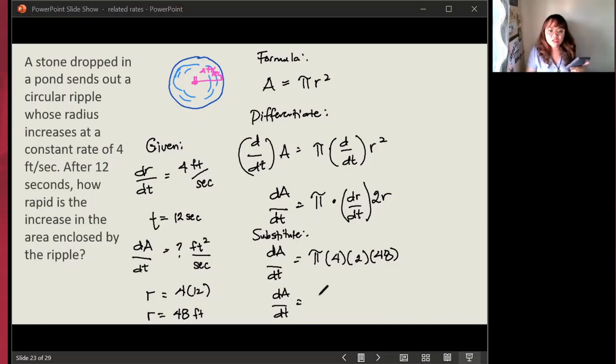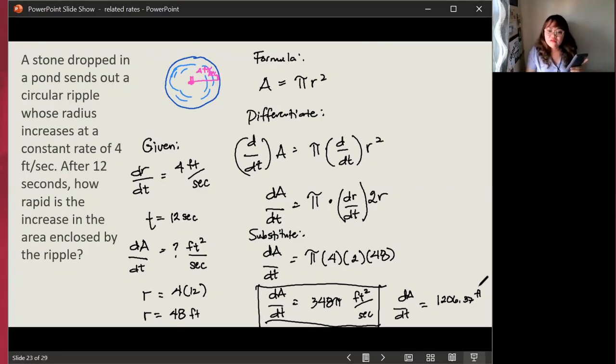I'll get 384 pi square feet per second. So this is one answer. Or another answer is dA over dt. Using decimals, you'll get 1,206.37 square feet per second. And we're done. That's it. Thank you so much.